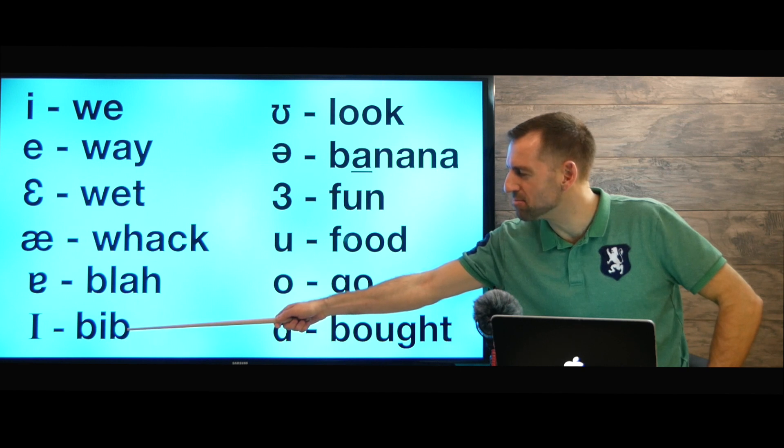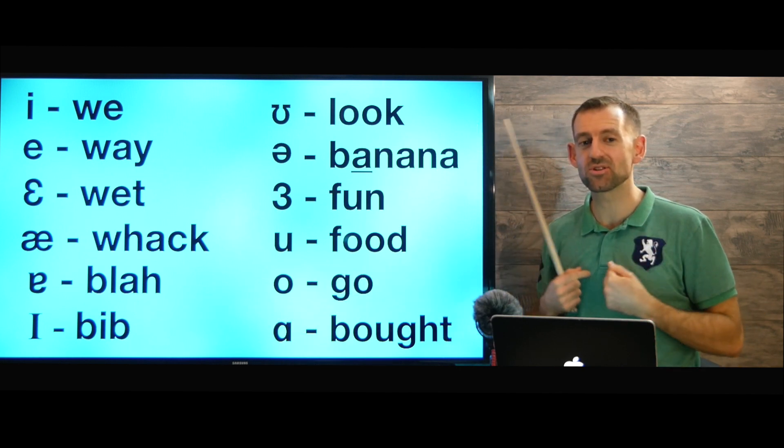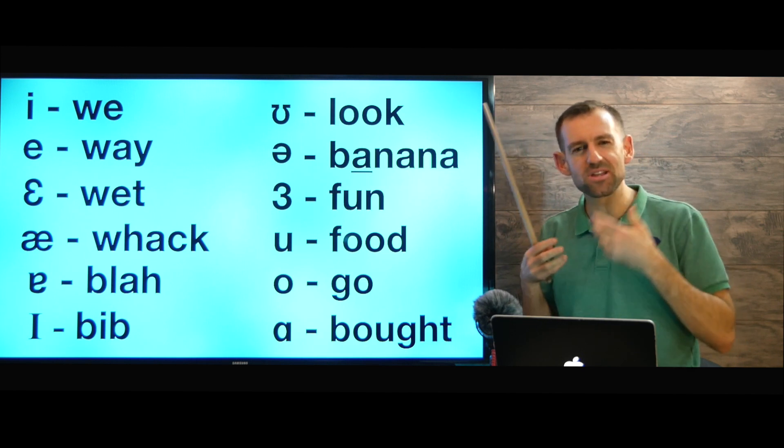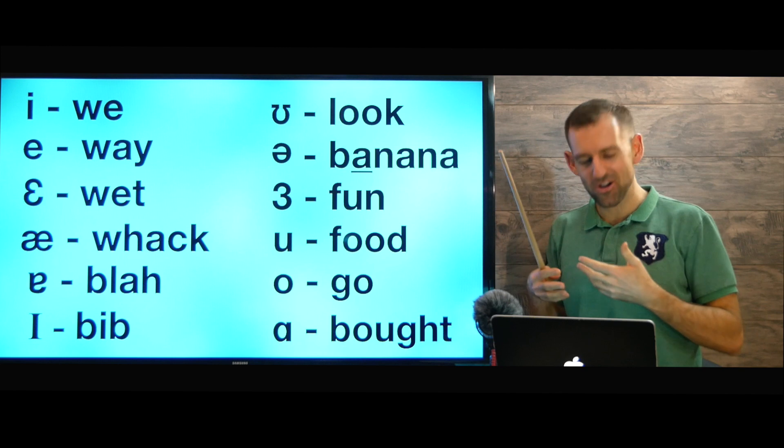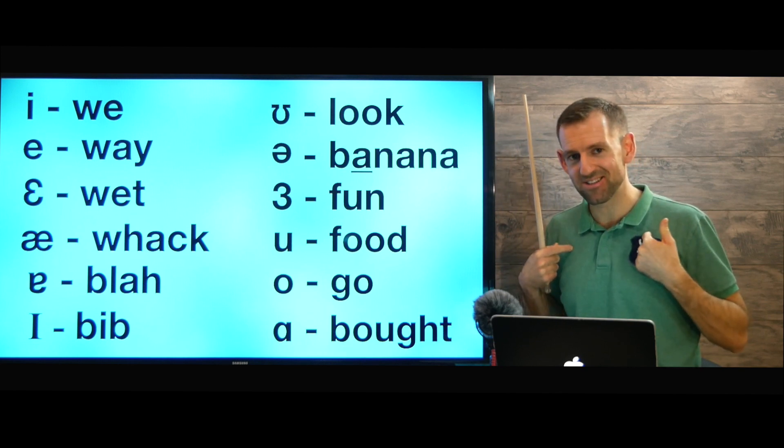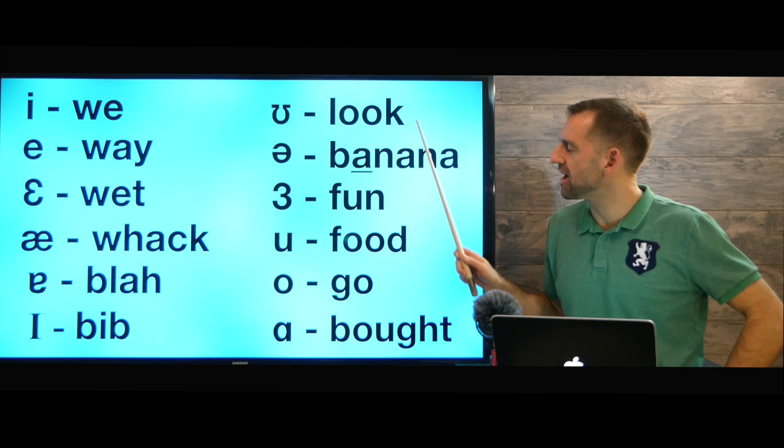Now bib. E, bib. A bib is something a baby wears when it eats. You know, when babies eat, they're really messy, right? They get food all over themselves. So they need to wear a bib when they eat.